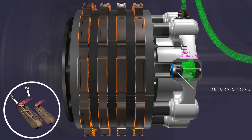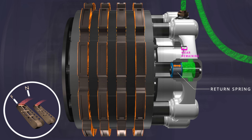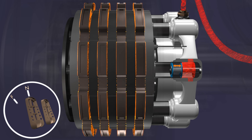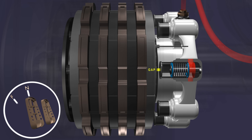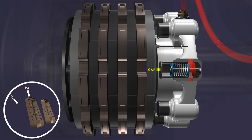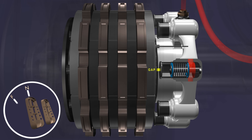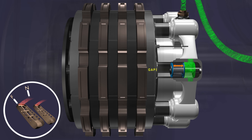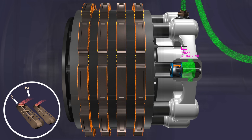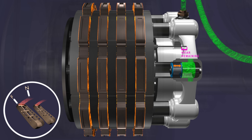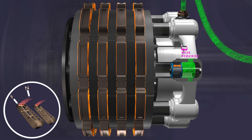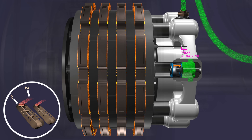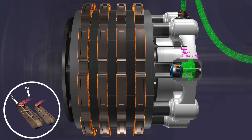However, brake wear creates a problem for the piston retraction mechanism. When the brakes are released, the return spring retracts the piston, opening up a significant gap between the pressure plate and the piston. When the brakes are reapplied, the piston has to travel a distance before it makes contact with the pressure plate and the brakes become effective. This varies the brake response time and performance as the brake wears down, and the pressure plate's distance from the piston keeps increasing.